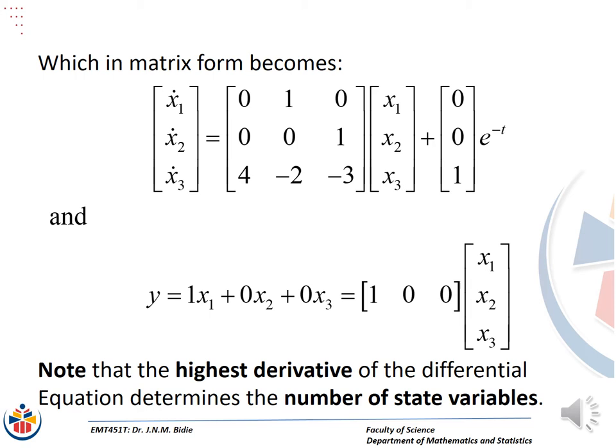We also recall that y equals x1. So I wrote: 1·x1 plus 0·x2 plus 0·x3, meaning C transpose is [1, 0, 0] since we have three variables x1, x2, and x3. This is the whole state space representation. Note that the highest derivative of the differential equation determines the number of state variables you will have in your state space representation.